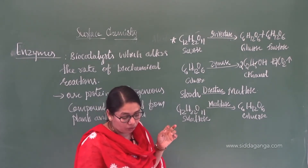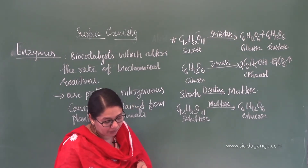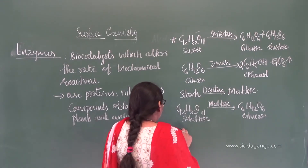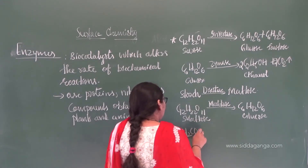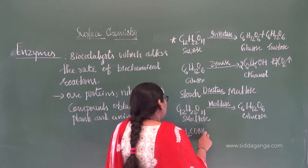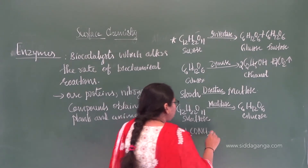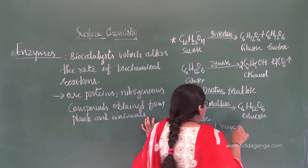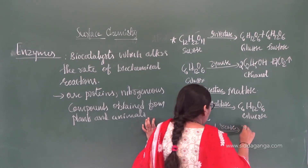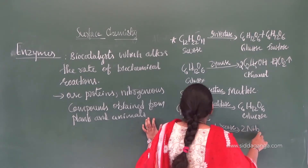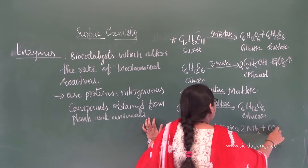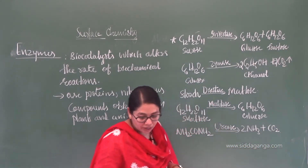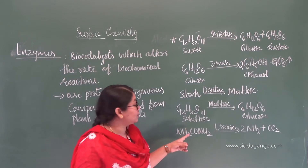Another example is urease. Urease converts urea (NH₂-CO-NH₂) into ammonia and carbon dioxide.